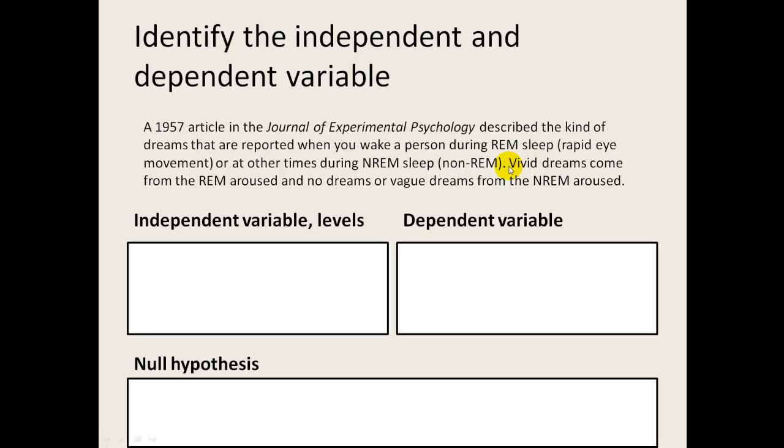So a 1957 article in the Journal of Experimental Psychology described the kind of dreams that are reported when you wake a person during REM sleep, or at other times during non-REM sleep. Vivid dreams tend to come from the REM sleep stage, and no dreams are vague dreams from the non-REM stage. So what kind of independent variable and dependent variable could they have been measuring?